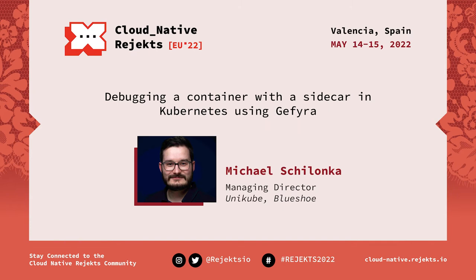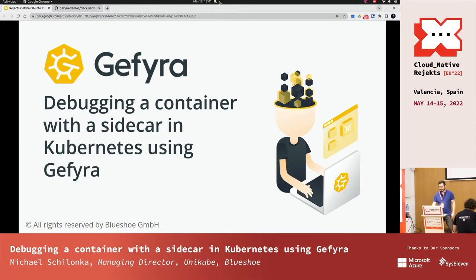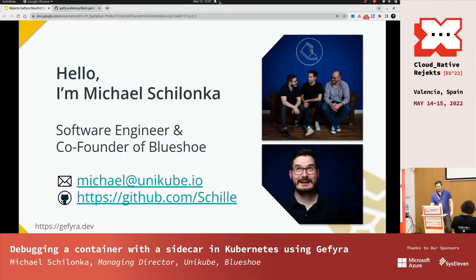I'm now going to talk about how you can debug an application container running behind a sidecar in Kubernetes using GFyra. So first things first, I'm Michael, a software engineer and co-founder at BlueShoe.